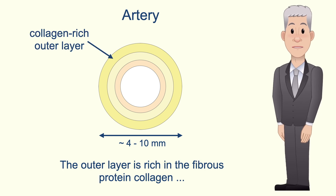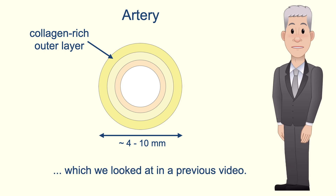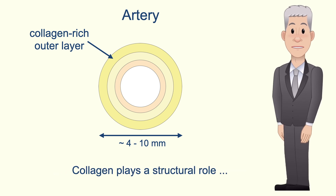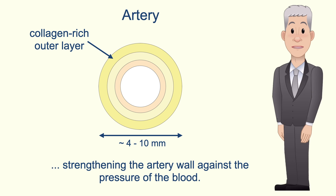The outer layer is rich in the fibrous protein collagen, which we looked at in a previous video. Collagen plays a structural role, strengthening the artery wall against the pressure of the blood.